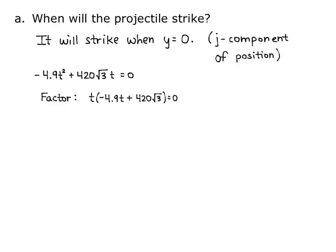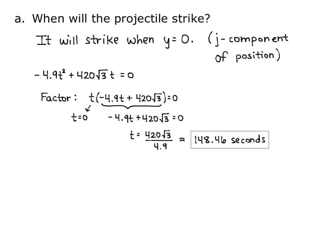Using the zero factor property, either t equals 0 — which is the start time — or negative 4.9t plus 420 square root of 3 equals 0. This gives the time when the projectile hits the ground after being in the air. Isolating t, we get t equals 420 square root of 3 divided by 4.9. This is the exact flight time. Approximating, we get 148.46 seconds that the projectile spends in the air.